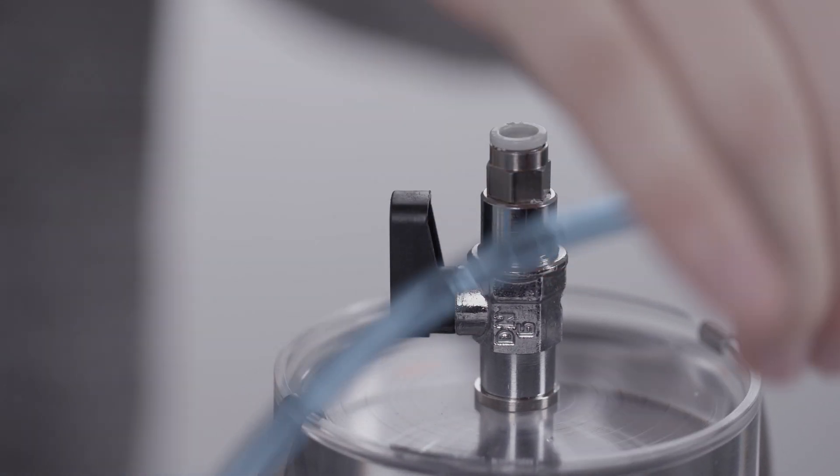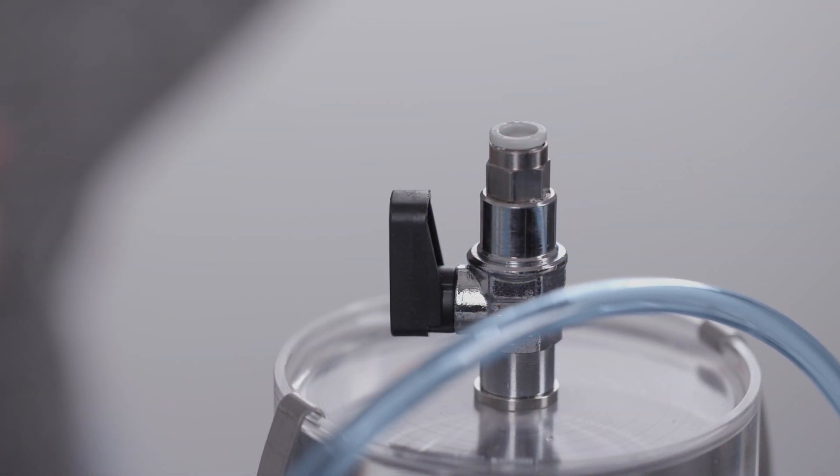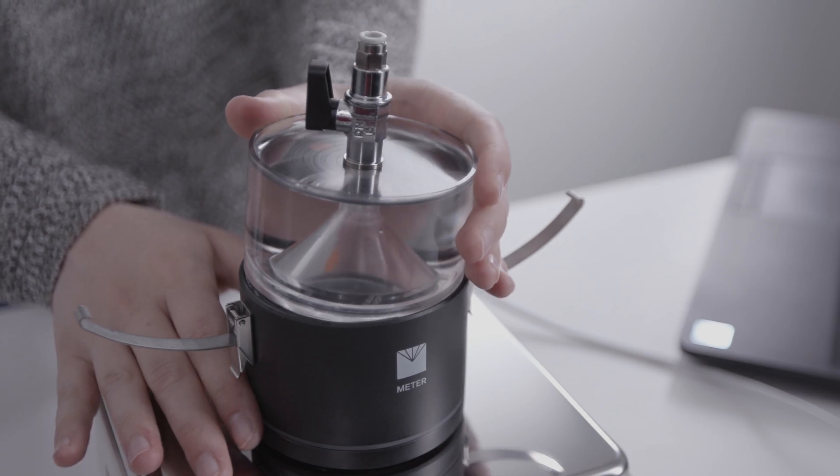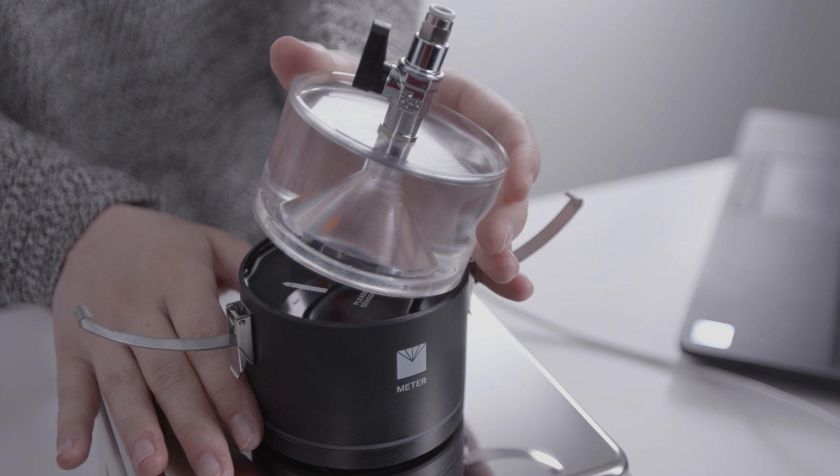Disconnect the HyProp sensor unit from the vacuum refilling station only after the vacuum has been slowly released. Remove the sensor unit refilling attachment by lifting it off from one side.